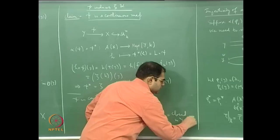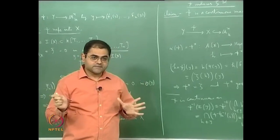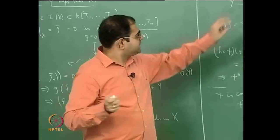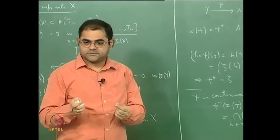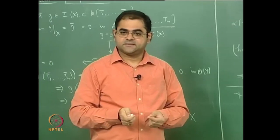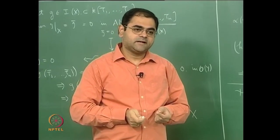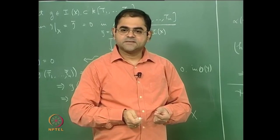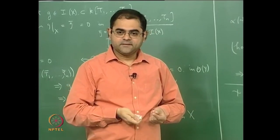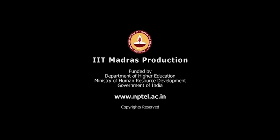The crucial point to understand — which you can treat as a separate exercise — is that for any variety, the common zero locus of a bunch of regular functions is a closed subset of that variety, because regular functions are locally quotients of polynomials, and taking zeros amounts to taking zeros of the numerator polynomials. That fact is what makes the continuity argument work. So the proof ends here.